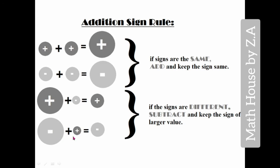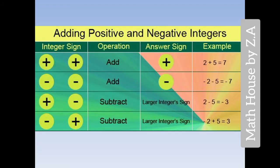We will subtract both but place the answer with a negative sign because the negative number is greater. Let's understand with some examples. Adding positive and negative integers — here you have integer signs. For example, if you have two numbers with a positive sign, let's have a look at the example box.